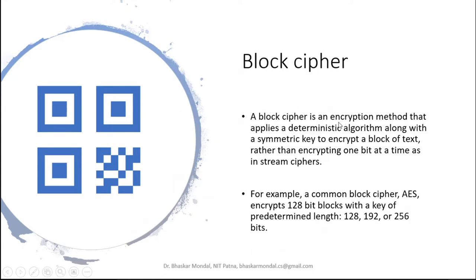Instead, block cipher takes a chunk or block of data and encrypts that entire block at a time. It then takes another block and encrypts that. So if you have a large amount of data, that data is divided into equal-size blocks and each block is encrypted. For example, a common block cipher is AES, which is very popular and widely used.